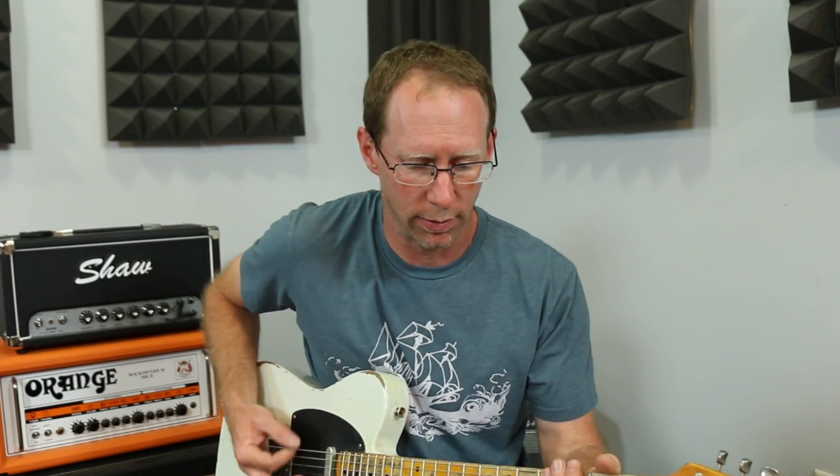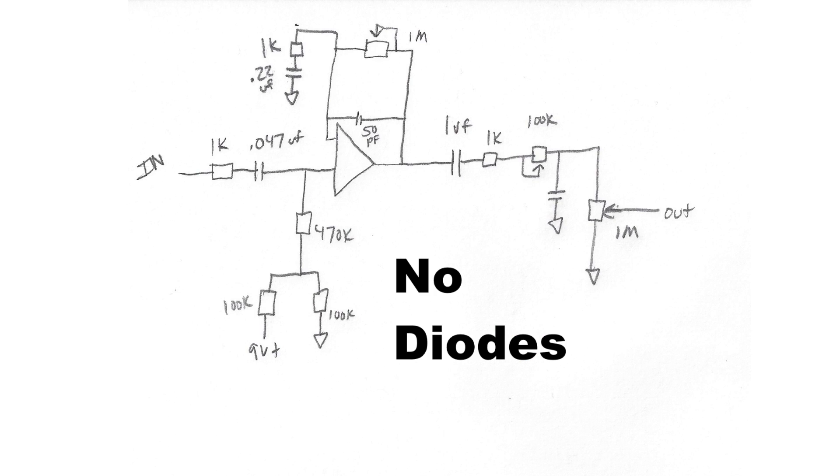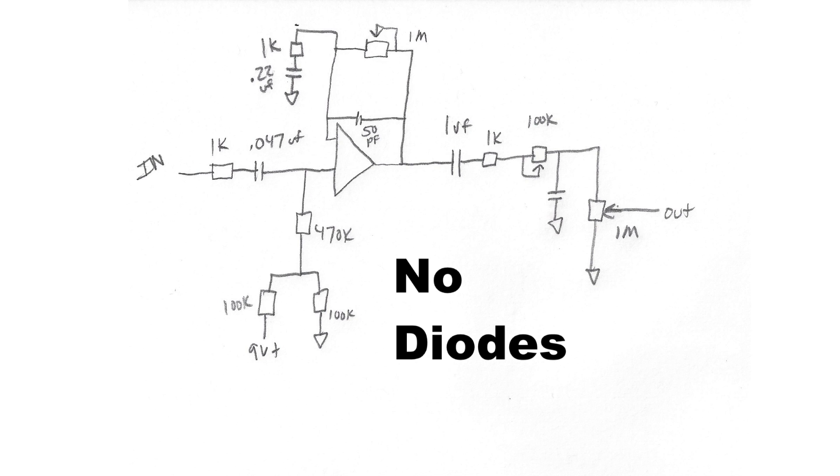Let's go with the... This is hard clipping. Schematically, let's look at the schematic of what that looks like right now. And let's compare that to the schematic without the diodes. Look at that right now. And now the schematic with the soft clipping diodes right now.